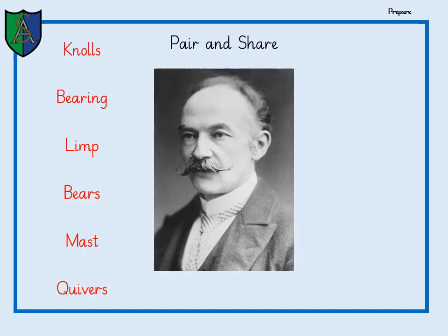Here are some key pieces of vocabulary you will need to know in order to complete this comprehension: nulls, bearing, limp, bears, mast, and quivers. What I want you to do is go away now and find the definitions of these words, either through a dictionary or maybe looking them up online. Make sure every single definition is on your piece of paper or in your word document so you've got proof that you've gone and found those pieces of vocabulary.